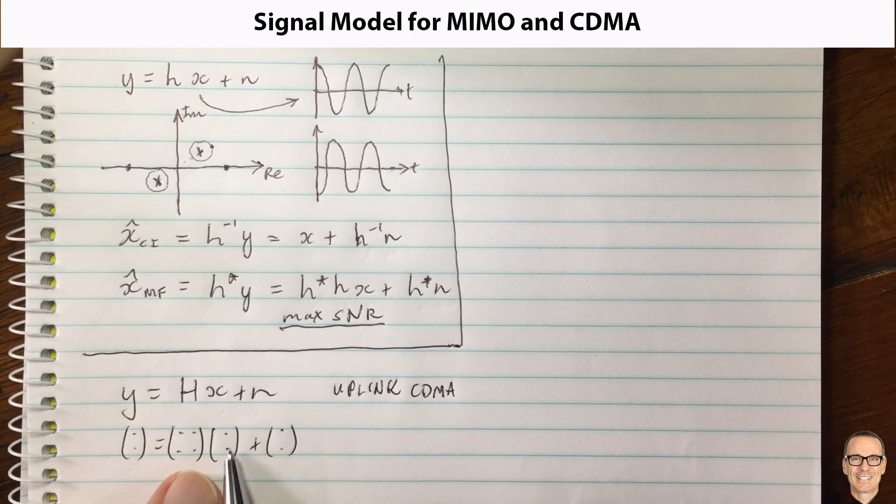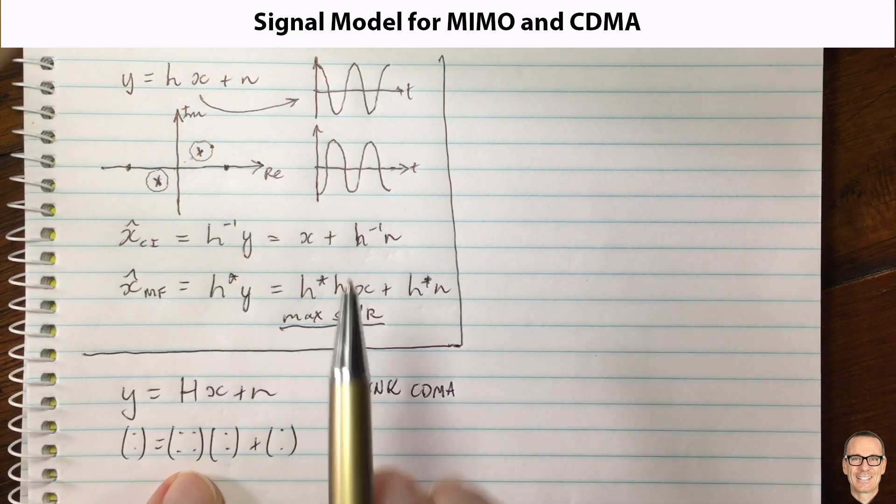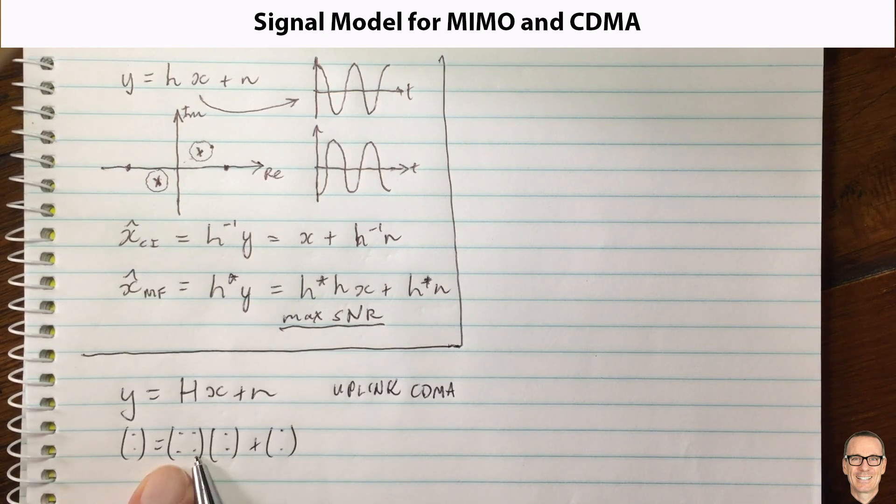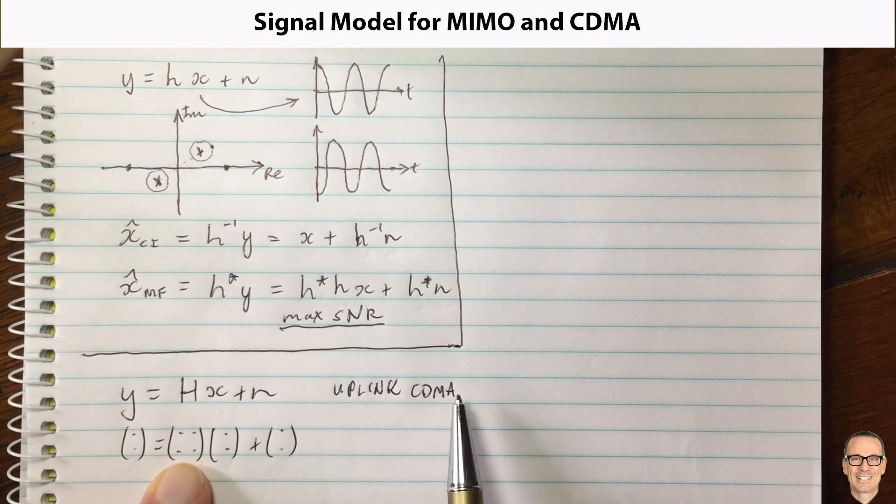In this case, each of these two elements of x are the symbols being sent. These symbols are the symbols being sent from two different users. And in this case, this matrix H is the spreading matrix for the CDMA. What I mean by that is it's the spreading code for each of the users.